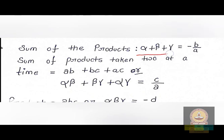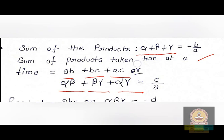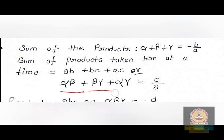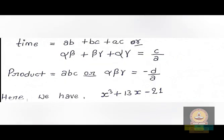As we know, for any cubic equation, the sum of the roots — alpha plus beta plus gamma — equals minus b upon a. The sum of the products of roots taken two at a time — alpha·beta + beta·gamma + alpha·gamma — equals c upon a. And the product of all roots — alpha·beta·gamma — equals minus d upon a.